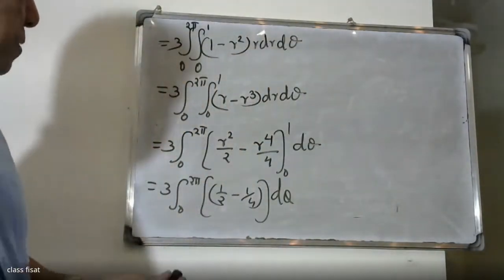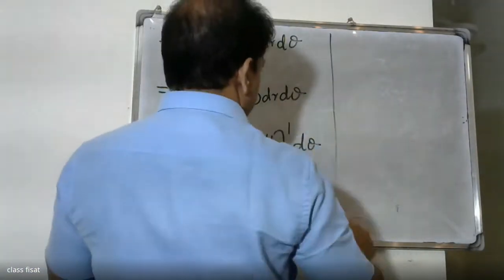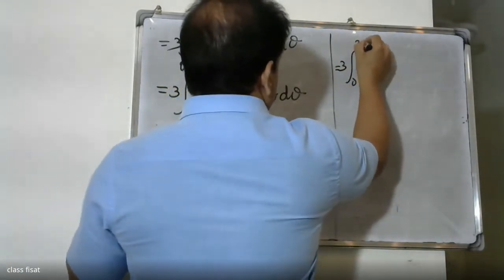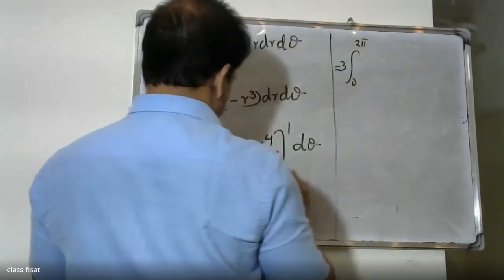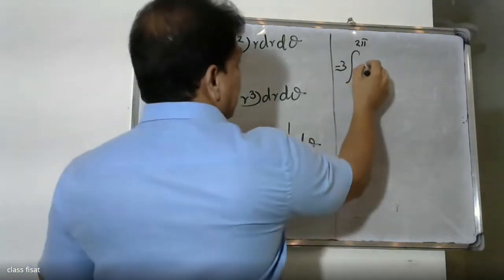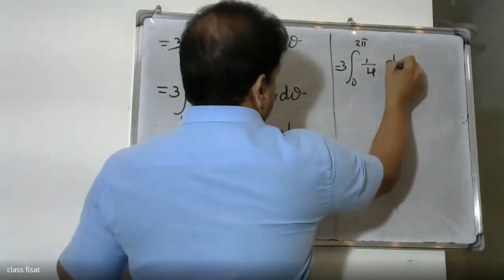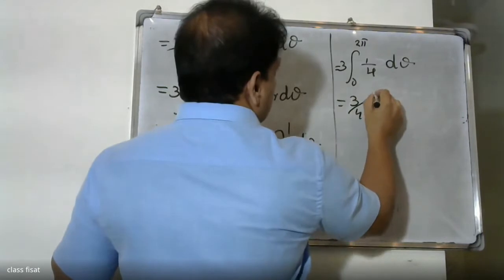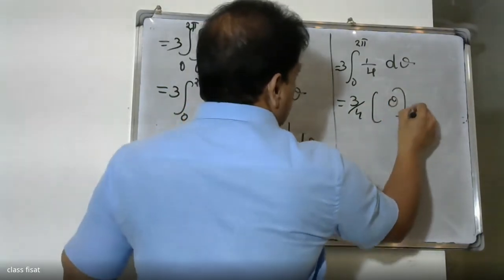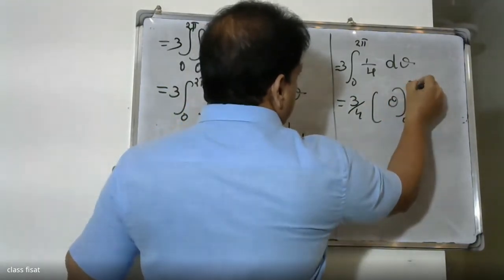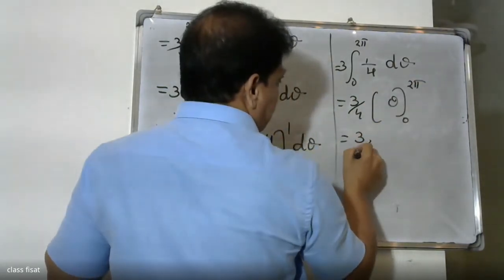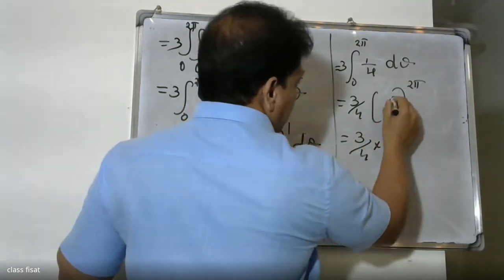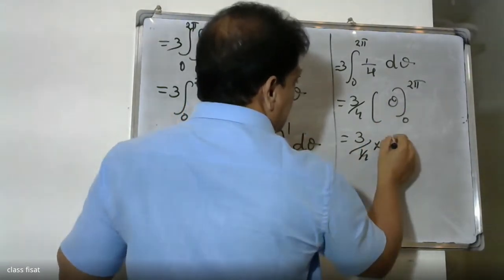Substituting the limits: 3 times the integral from 0 to 2pi of (1/2 minus 1/4) d-theta, which equals 3 times (1/4). So we have 3/4 times the integral from 0 to 2pi d-theta, giving 3/4 times 2pi.